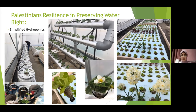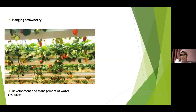In addition, UAWC is using the technique of hanging strawberry, which has been a successful technique. It helped increase the number of cultivated land from 8 dunams to 14 dunams, reduced irrigation water consumption by around 60%, and increased production beyond what open-field cultivation achieves. Furthermore, the Union of Agricultural Work Committee invested in the management and development of water sources, providing 3,500 dunams with water.